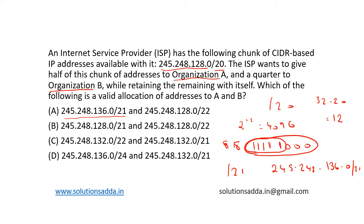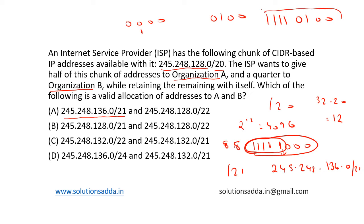The 12th bit can also be set to 0. So let's set the 12th bit to 0, giving us 0000 as the remaining bits in the third octet. Now we have to assign only the next quarter to organization B, so let's assign the 13th bit as 1. We then have 0100, resulting in 11110100, which gives us 245.248.128.0/22.